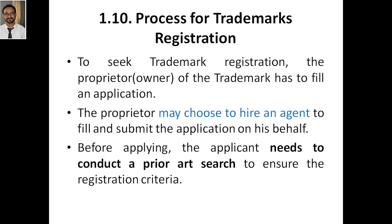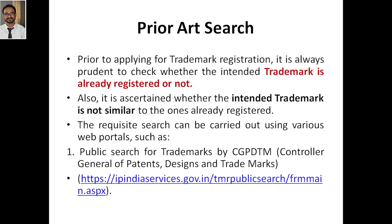Before applying, the applicant needs to conduct a prior art search. He has to make sure that this particular trademark does not already exist. Similar to the prior art search done for a patent or copyright, here in the prior art search you will check if a similar or the same trademark already exists or not. It is always prudent to check whether the intended trademark is already registered, and also to ascertain whether it is not similar to ones already registered.